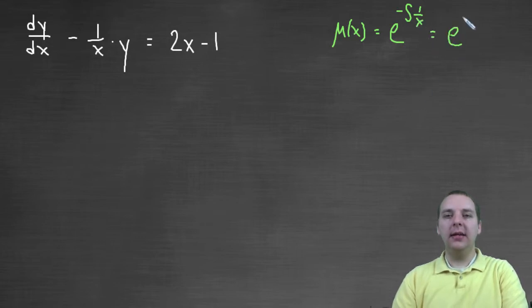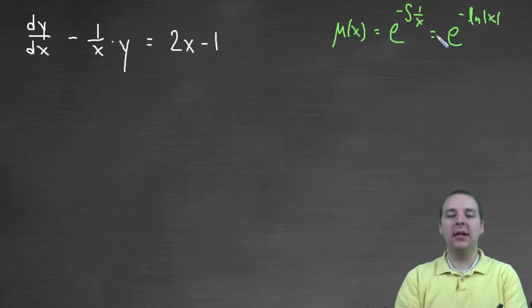And this will be e to the negative natural log of x, obviously, because the integral of one over x is obviously natural log of x. Now, unfortunately, the e and the natural log can't cancel because of that negative. But we can use an algebra property of logarithms that says you can pull that negative back up into the exponent for x and make it x to the negative one.